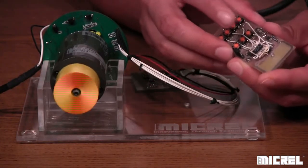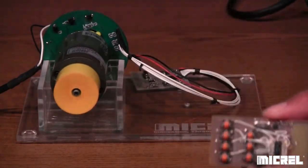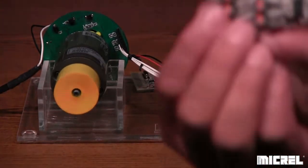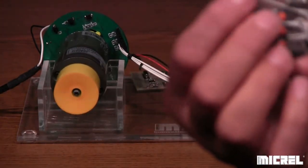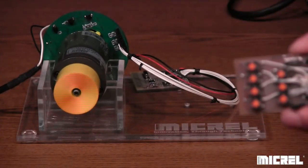And we also have the forward reverse, like I showed you before. And the beauty of RF is that I can actually be a distance away from the motor and still control the motor, just like you would, for example, a ceiling fan.